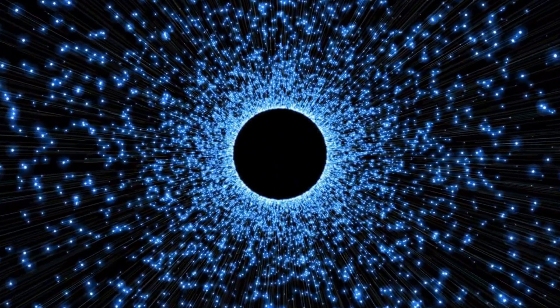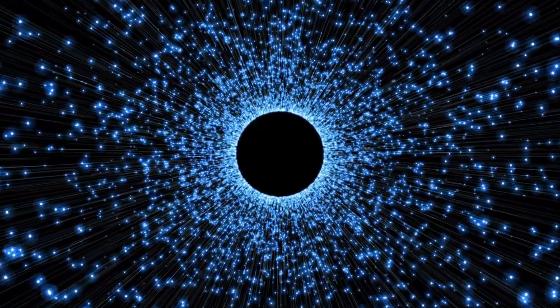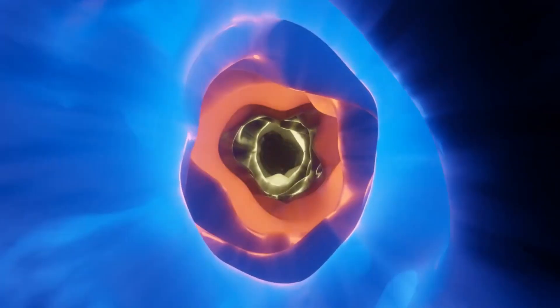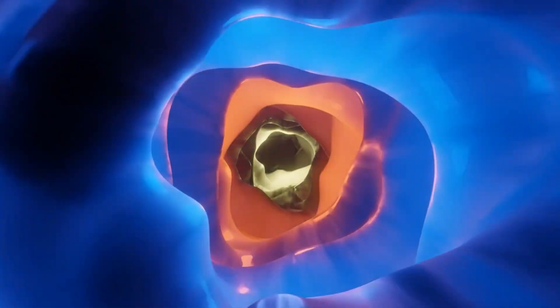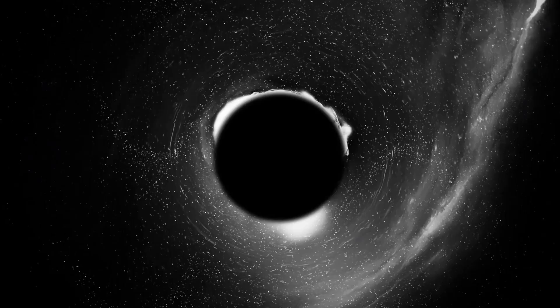As these massive stars collapse, something extraordinary occurs close to their surfaces. Time itself starts to play tricks. From the perspective of someone far away, time appears to slow down near the event horizon, the last defining moment for anything falling into a black hole. It's like the star's clock ticks at a different speed compared to our own.